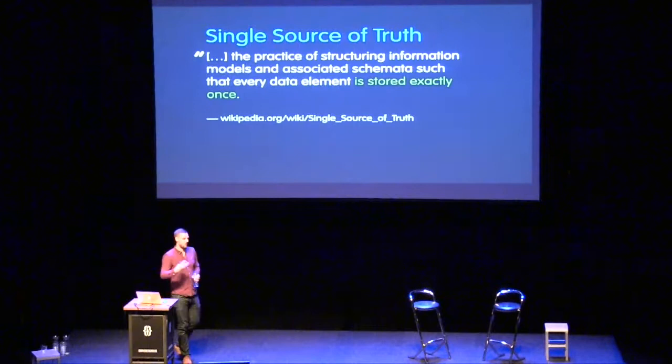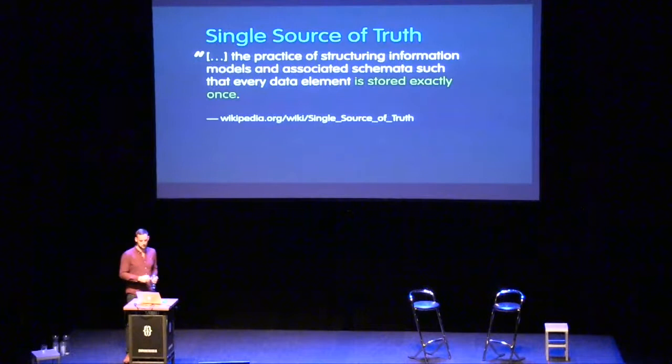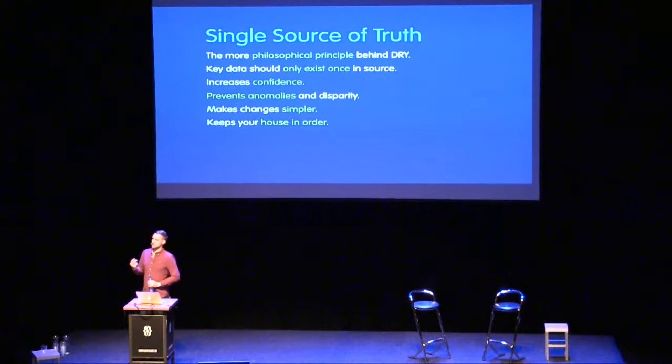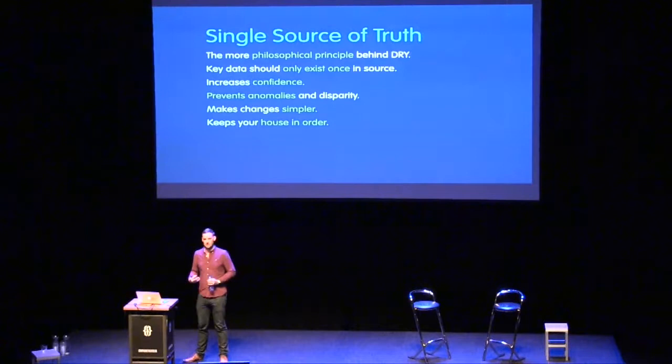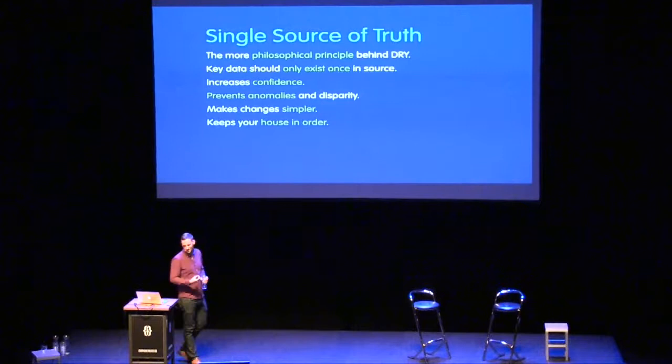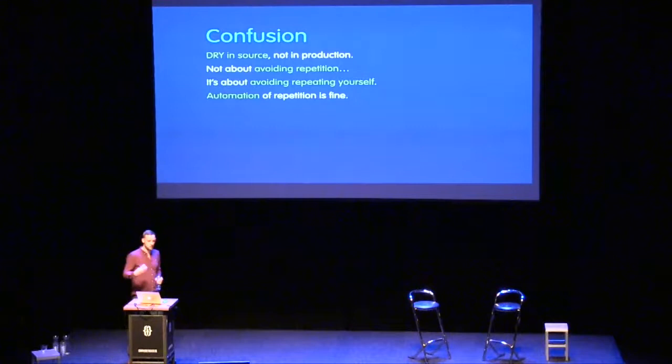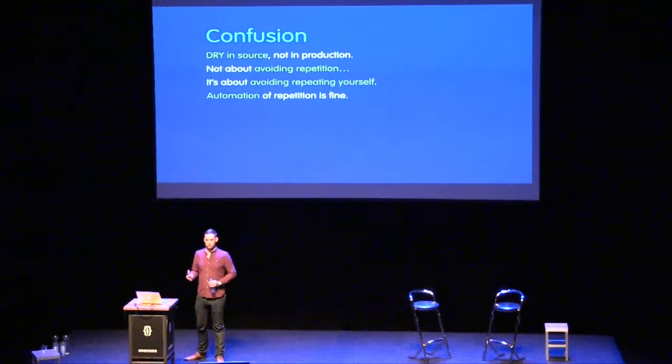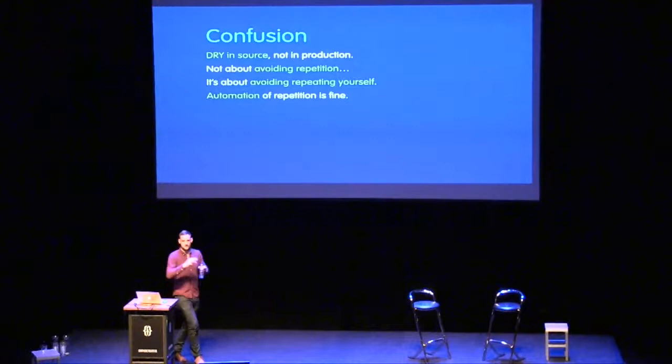The Single Source of Truth is the practice of structuring information so it's stored exactly once — a philosophical backdrop to DRY. Key data should exist once in source. This gives us a massive increase in confidence when we know we only need to change something once and it will propagate through the system. DRY in source, not in production — it's not about avoiding repeating any string whatsoever anywhere inside your project.